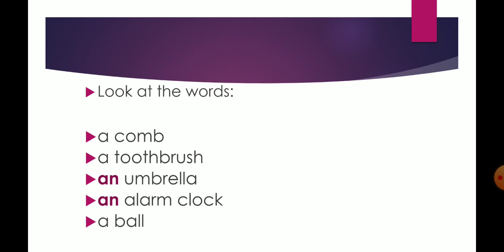A comb, a toothbrush, an umbrella, an alarm clock, a ball. Students, have you noticed something? Here, in front of some words, A and AN is written. Do you know why? Let's find out.